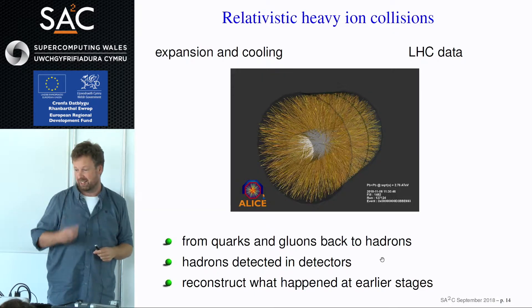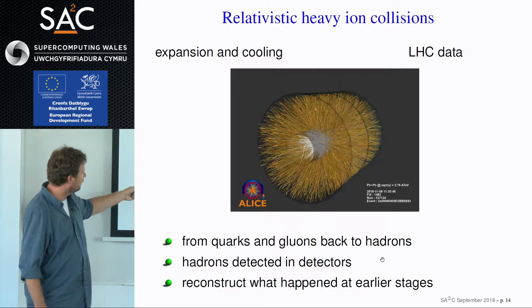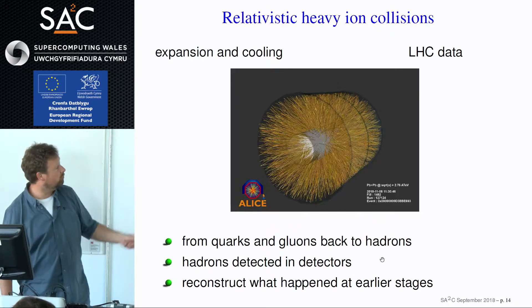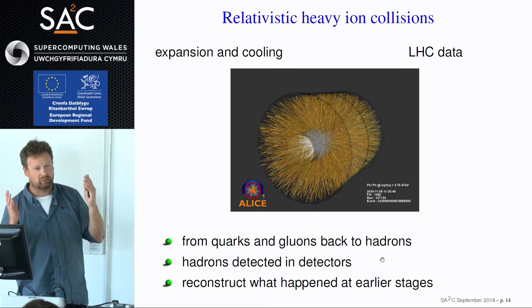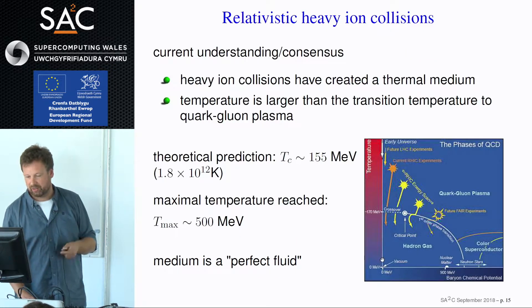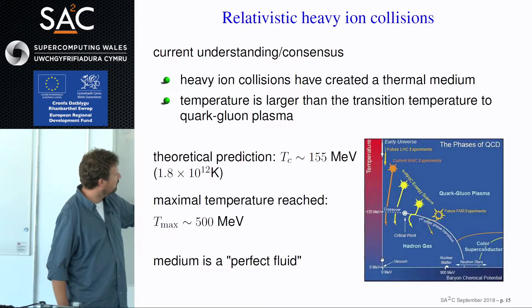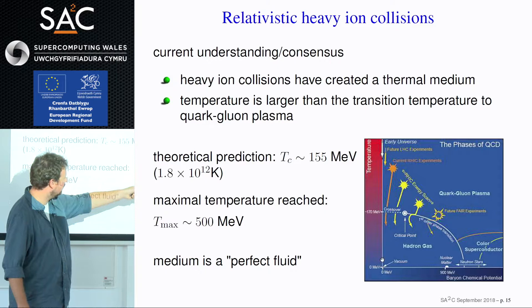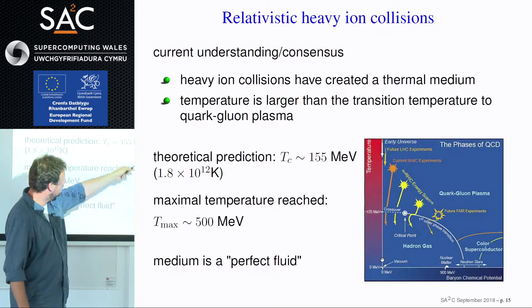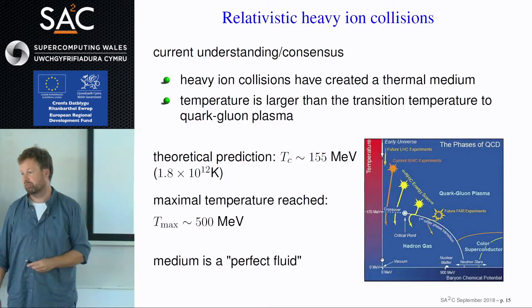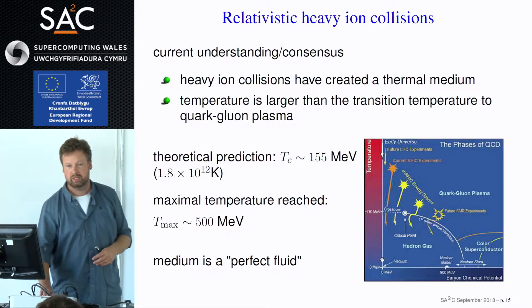This is a picture of the detector — RHIC data from STAR. The collision happened right in the center; the gold ions came along this way and collided, and all these lines are outgoing hadrons detected by the particle detector. The real challenge for phenomenologists is to reconstruct what happened in the center of the collision from all these outgoing particles and determine that the temperature reached the quark-gluon plasma phase. A similar plot from the Large Hadron Collider ALICE experiment shows lead colliding and all the debris. The consensus is that heavy ion collisions have indeed created a thermal medium at temperatures above the transition temperature — the quark-gluon plasma has been created in the lab.